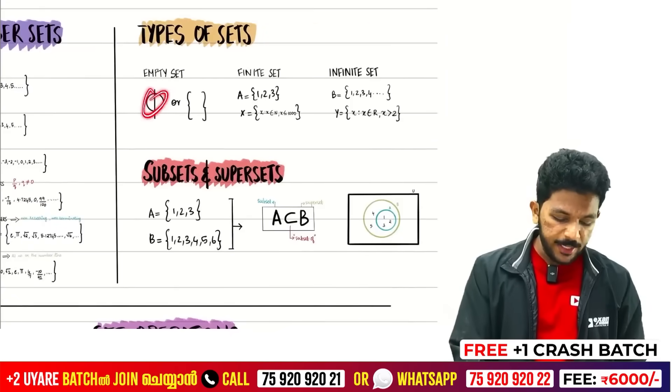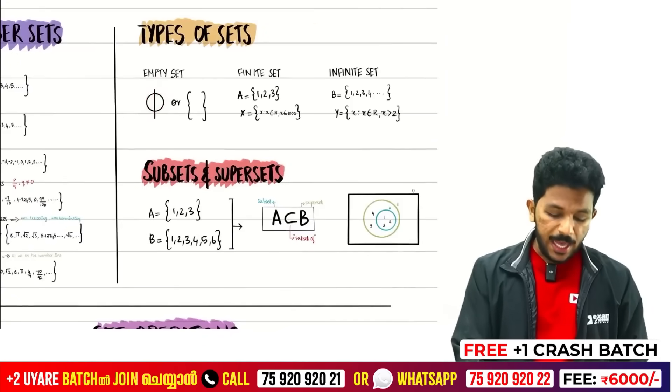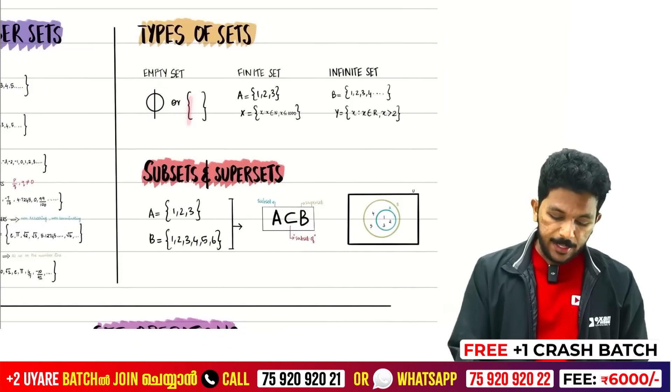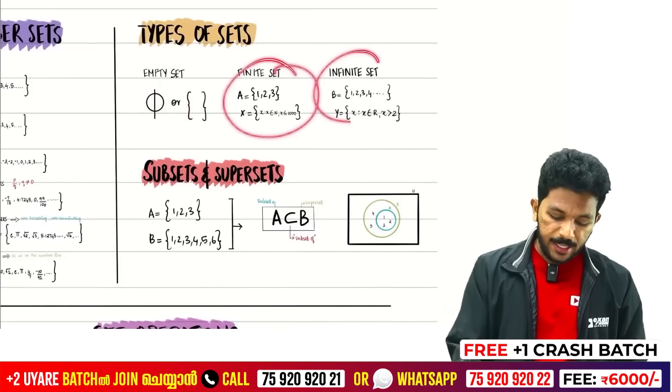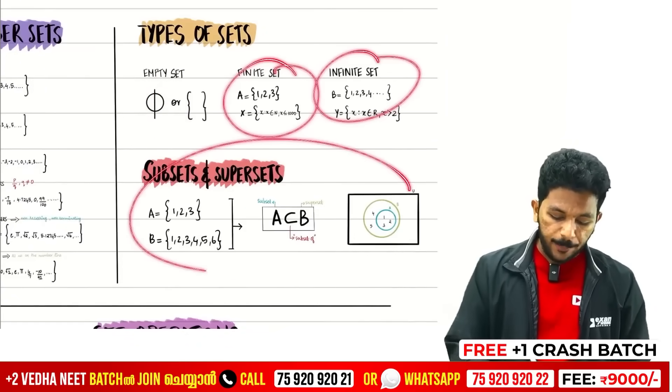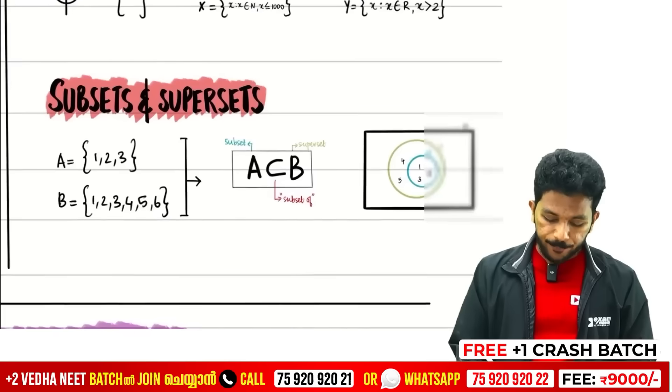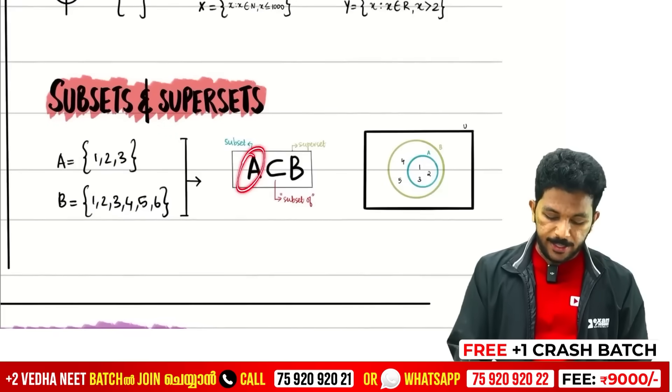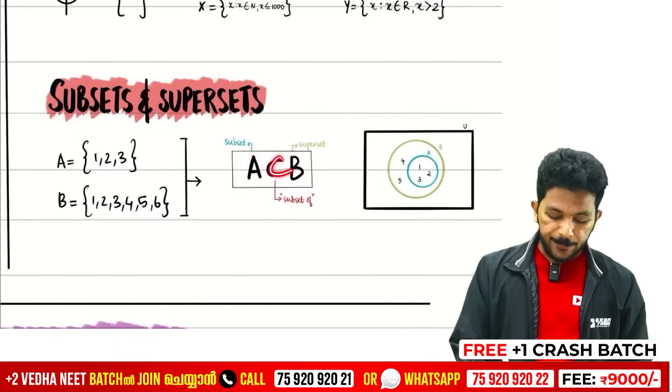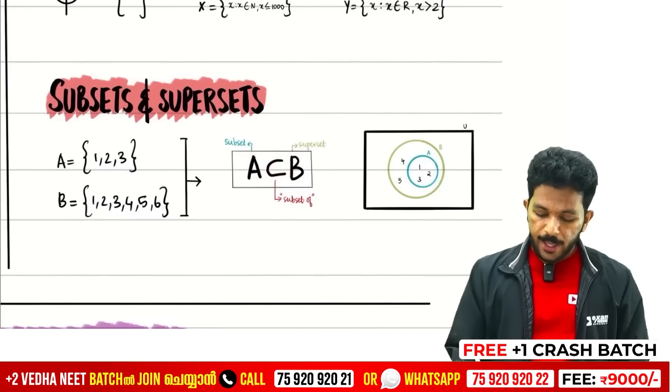Types of sets — there are 5 types. This is empty set, finite set, infinite set. Subsets — what is a subset? This is superset. This is a symbol for it.